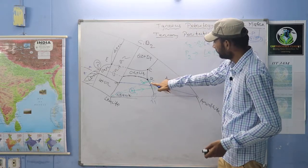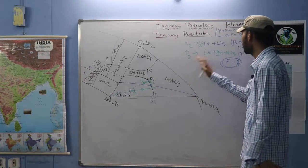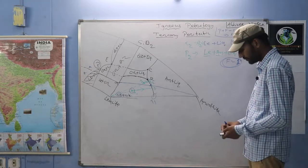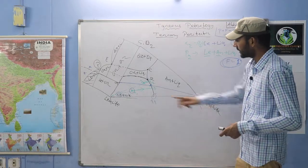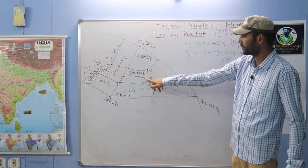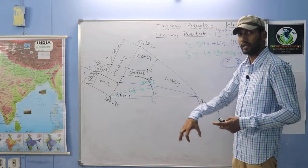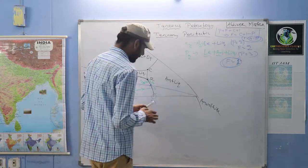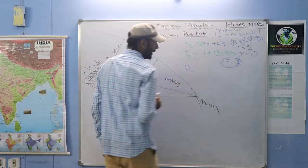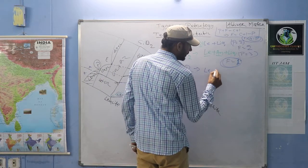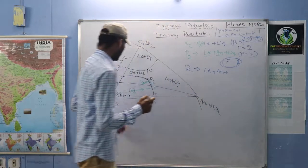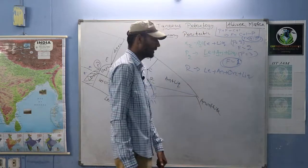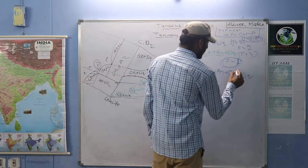From P2 to R, the magma will move. At P2 there are three phases — leucite, anorthite, and liquid — so the degree of freedom becomes one, and it will follow the slope of the curve. This point will have higher temperature; adding quartz causes temperature to decrease. When the magma reaches R, there will be leucite, anorthite, and orthoclase plus liquid.